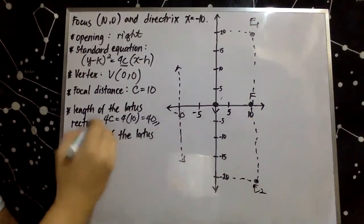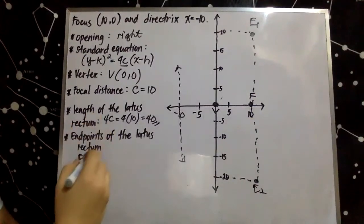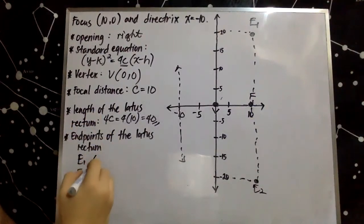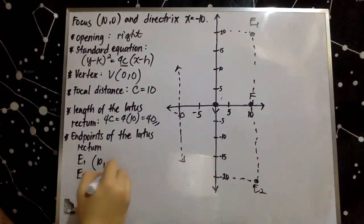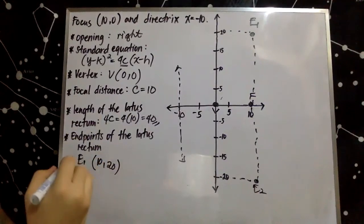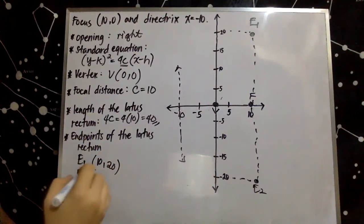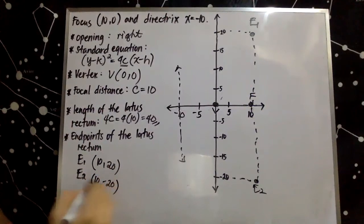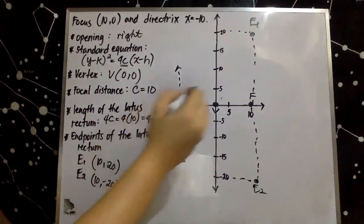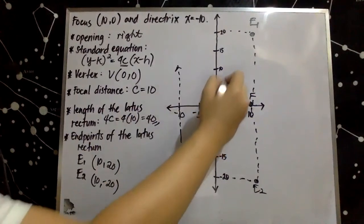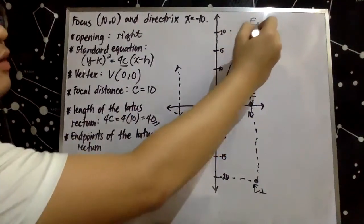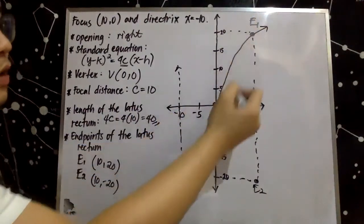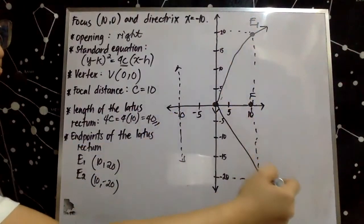The coordinate of endpoint one is (10, 20), and endpoint two is (10, negative 20). If we sketch our parabola, this is the sketch of the parabola that opens to the right, and this is the latus rectum.